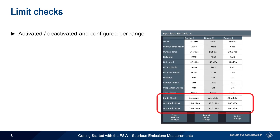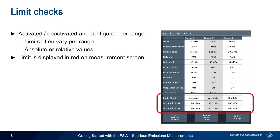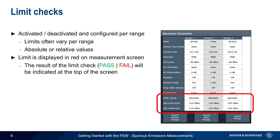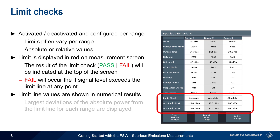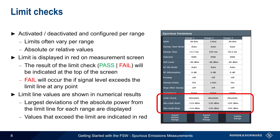Scrolling down the Sweep List shows the limit check parameters, which are also configured per range and often specified differently for different ranges. These limits can be entered either as absolute or as relative values. The limit line is displayed in red on the measurement screen. The overall result, pass or fail, is indicated at the top of the screen, with fail being shown if the measured signal level exceeds this limit line at any point. The limit line values are shown in the evaluation list — that is, in the numerical results — and the numerical values which exceed the limit will be indicated in red.